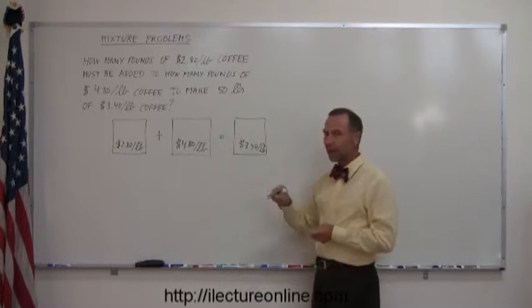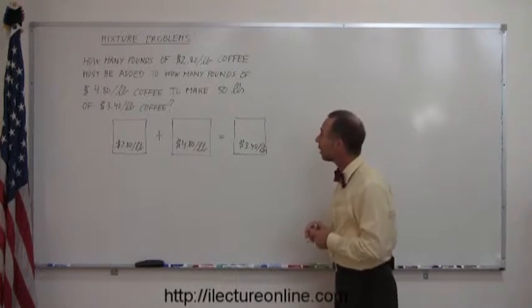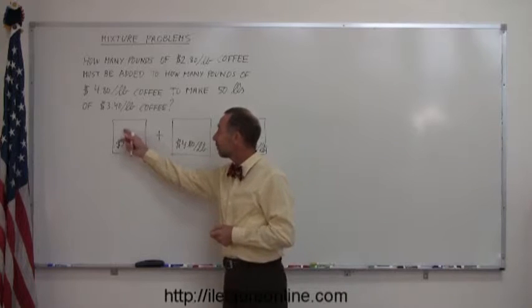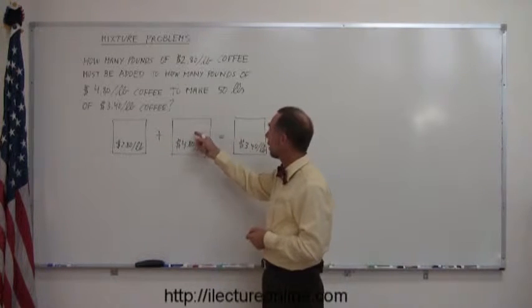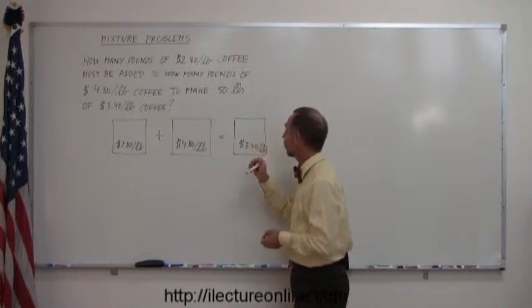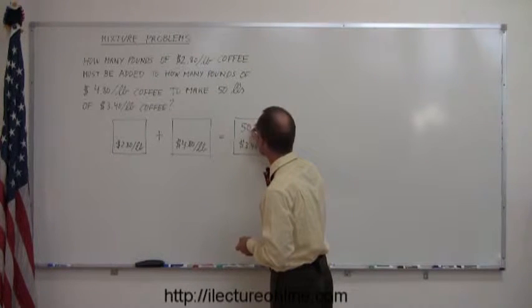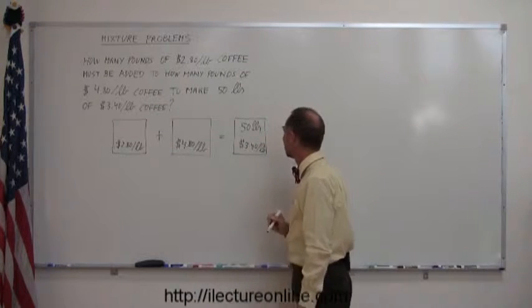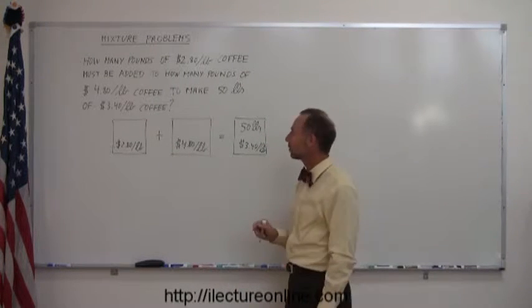The next thing we want to write down in each of these boxes is how much of each type we have. Now, they don't tell us how many pounds we have of this type, and they don't tell you how many pounds you have of this type, so that's what you're looking for, but they do tell you that you should end up with 50 pounds over here. So, 50 pounds is what you end up over here. That's a lousy looking S, but it's good enough.